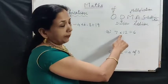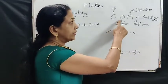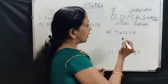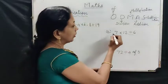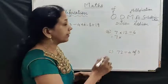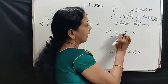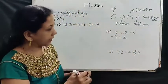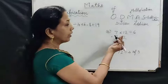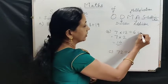'Into' means multiplication, and here we also have division. So which one do we do first? As per ODMAS, division comes before multiplication. Division is here: 12 divided by 6. So we write the first term as it is — 7 into — and 12 divided by 6 equals 2. Then we do the multiplication: 7 twos are 14. So the answer is 14.